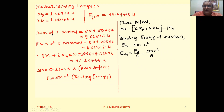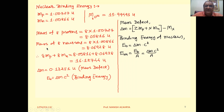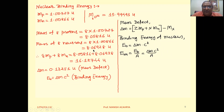We have the mass of one proton, so the mass of 8 protons will be 8 × 1.00727 = 8.05816 U. The mass of 8 neutrons is 8 × 1.00866 = 8.06928 U.